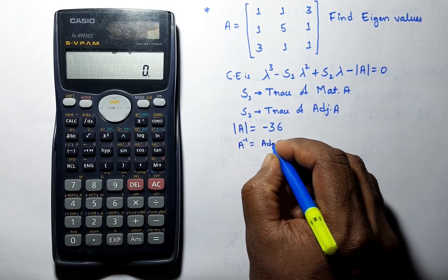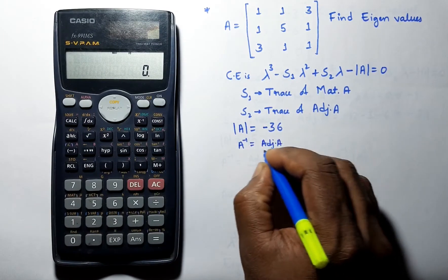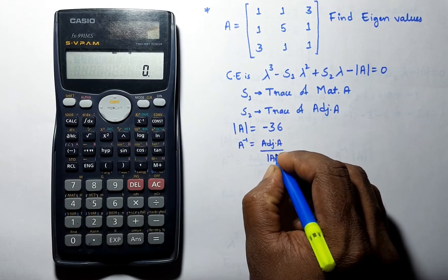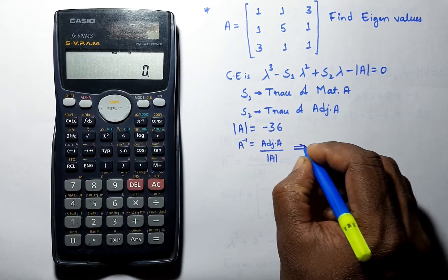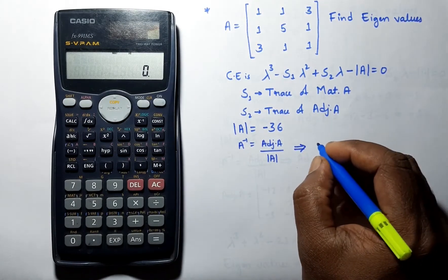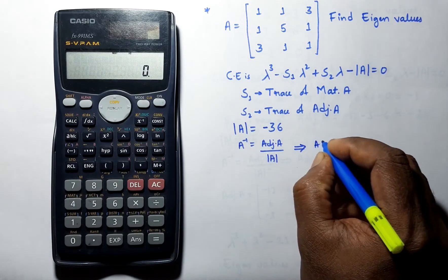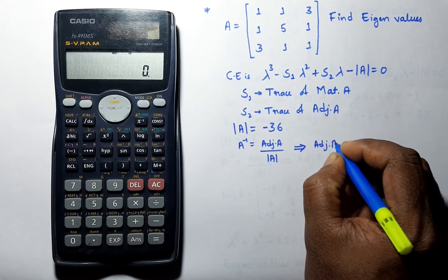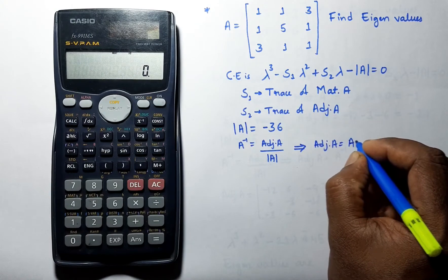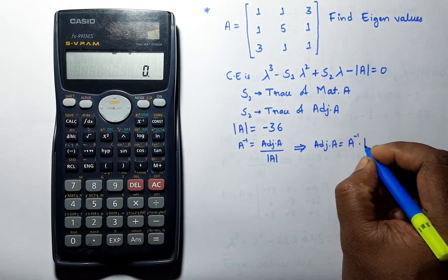We know that A inverse is equal to adjoint of A divided by determinant of A, which implies adjoint A is equal to A inverse times determinant of A.